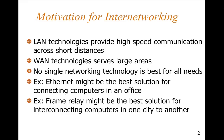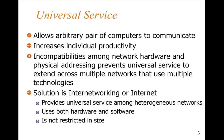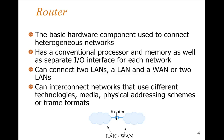The motivation for internetworking — I don't have to give you a sales pitch. LAN technologies provide high-speed communication across short distances; WANs cover larger areas. No single networking technology is best for all needs. Ethernet might be the best solution for connecting computers in an office, while frame relay might be better for interconnecting computers from city to city. Universal service allows arbitrary pairs of computers to communicate together — this is what IP is actually good for. It provides a universal protocol.